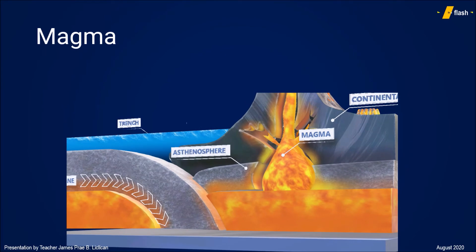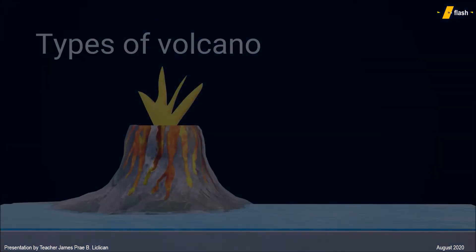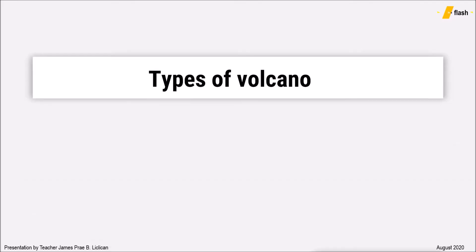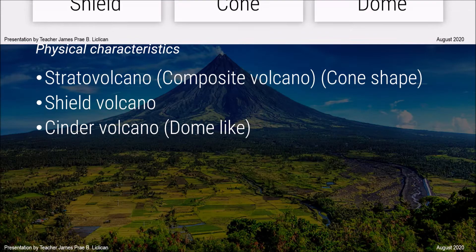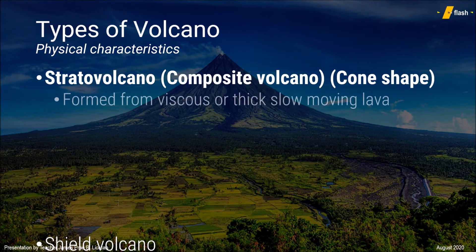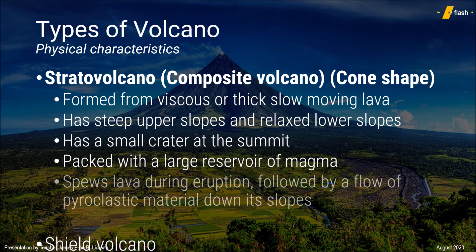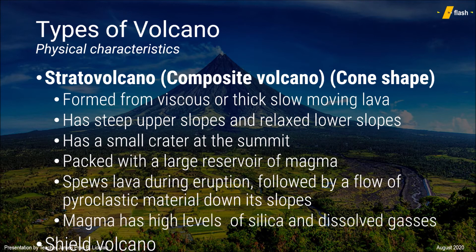There are three major types of volcanoes: stratovolcano, shield volcano, and cinder volcano. Stratovolcano, or composite volcano, are formed by layers of accumulated thick, slow-moving lava, which then in turn creates steep slopes. Composite volcanoes are also the most dangerous type of volcano, as the magma stored is of high density, evident with viscous lava spewed during eruption.